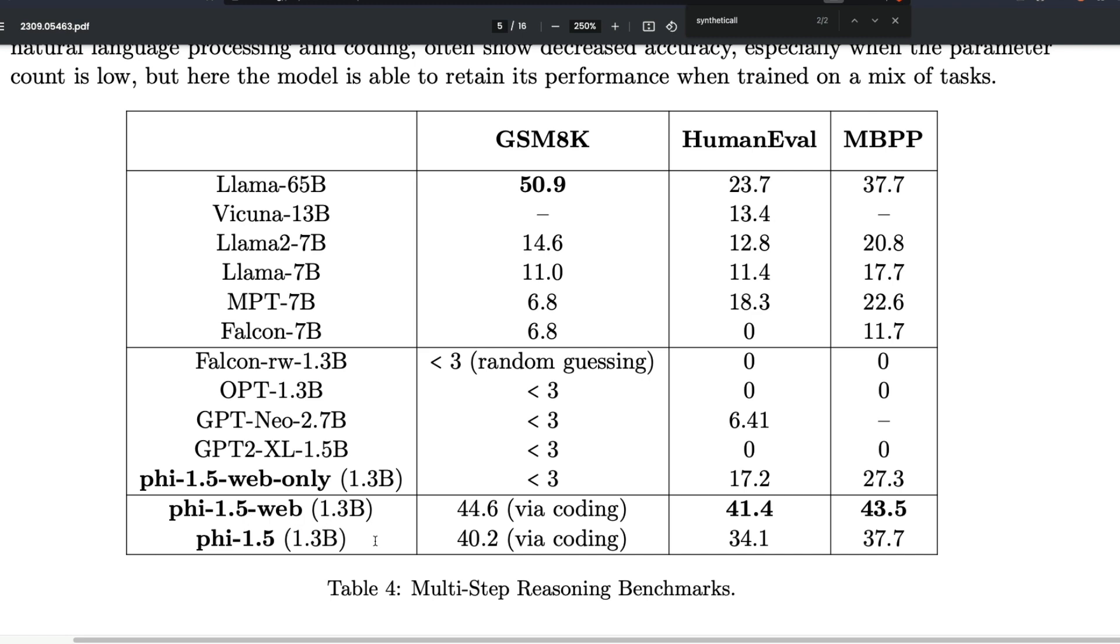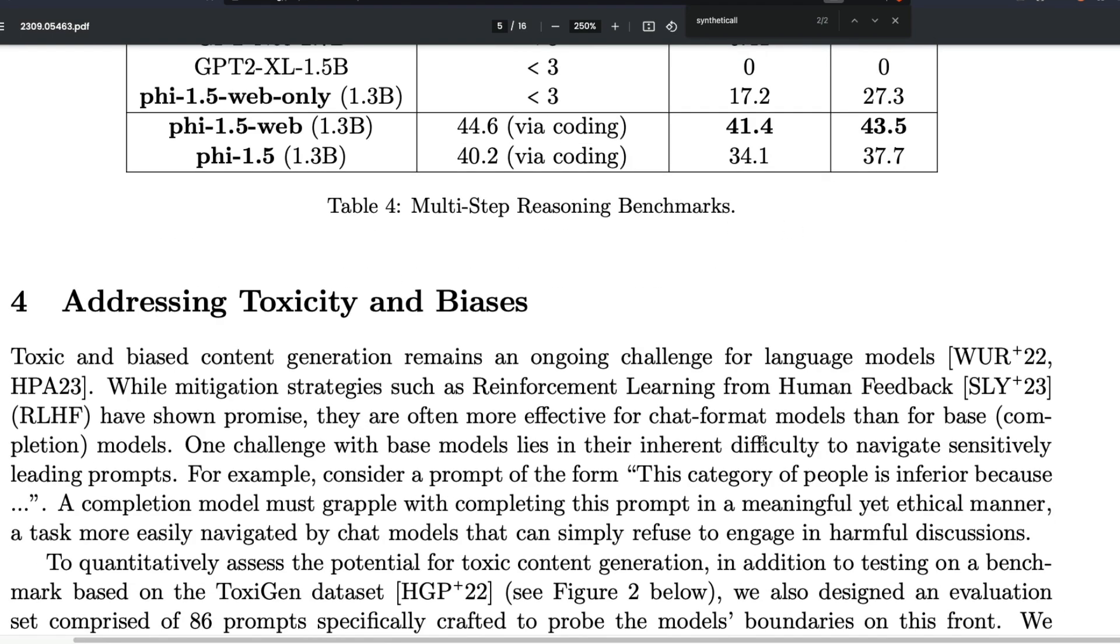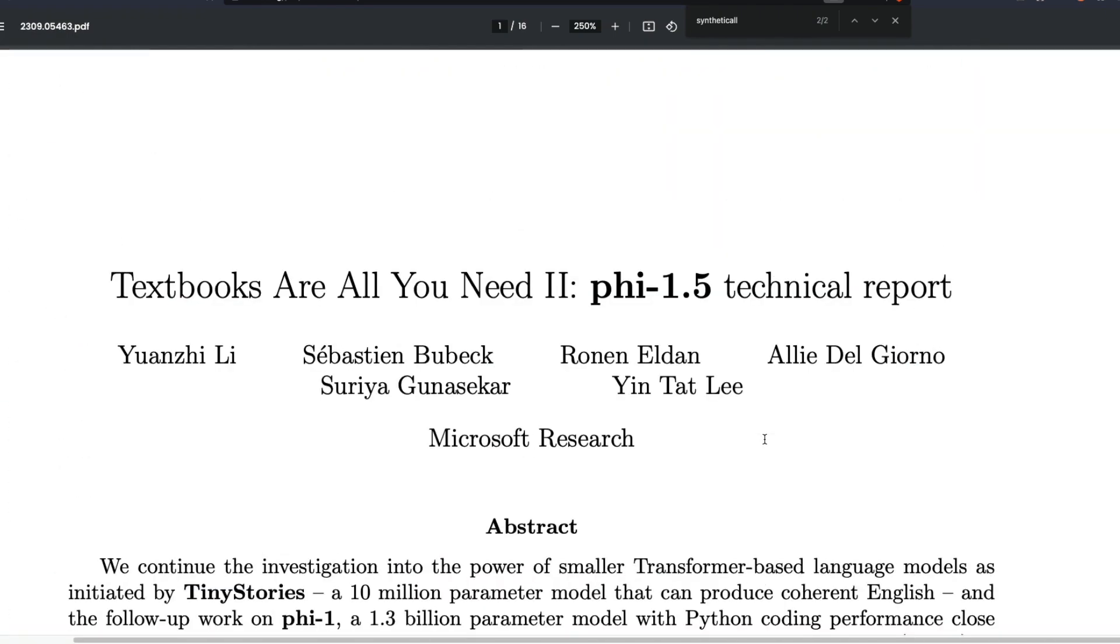But now when you just come down on this particular table, you would see stunningly, surprisingly, that Phi 1.5 billion parameter model or 1.3 billion parameter model with the web version, the extended web version, has scored 41 on human eval. It's quite unbelievable. If you see GSM 8K, it is still like Llama 65 billion is 50 and Phi 1.5, the base raw model is 40. It's still a much, much greater score. Like imagine you're comparing a 1.3 billion parameter model with a 65 billion parameter model. And especially if you see the human eval, which is like quite a popular benchmark, a lot of people use 65 billion parameter came with 23 points. And this is completely unbelievable.